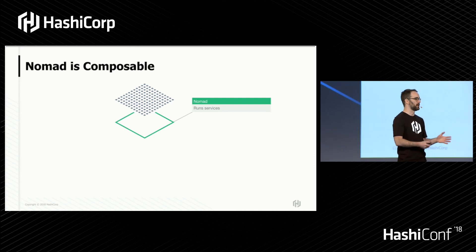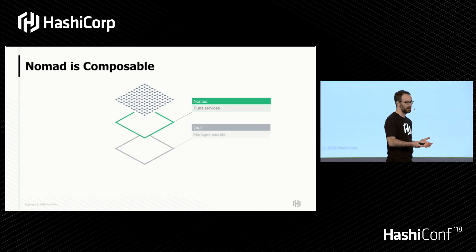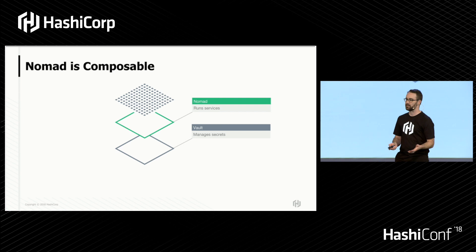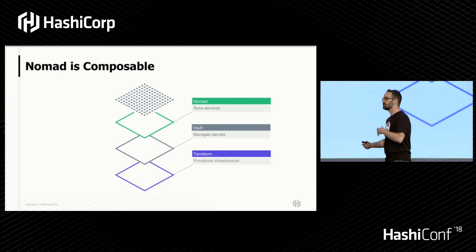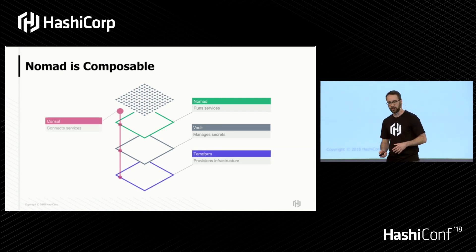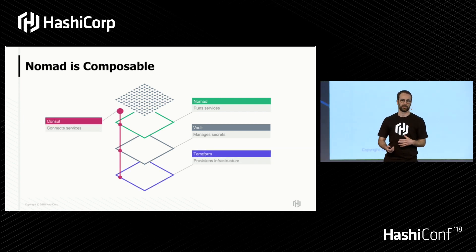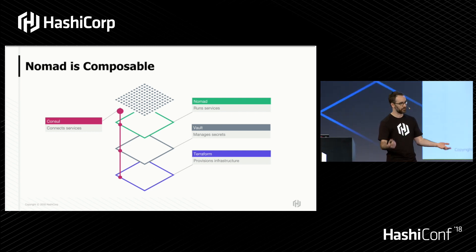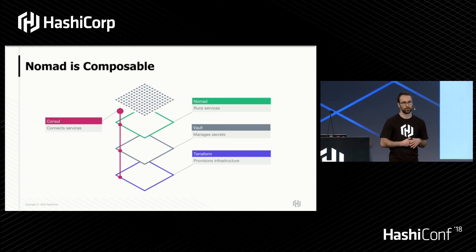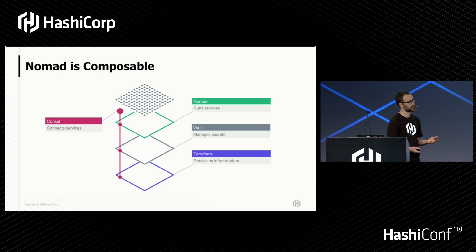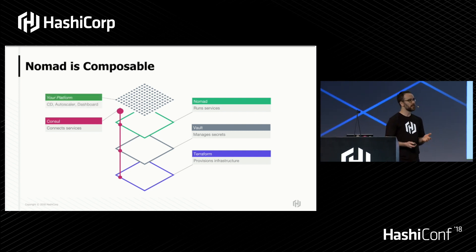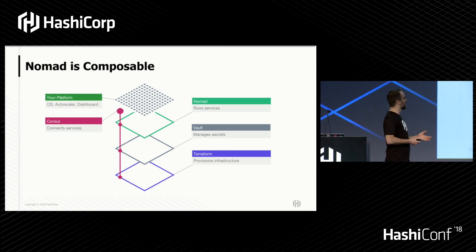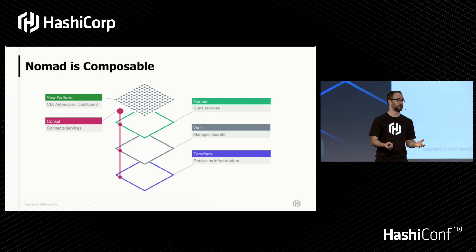Nomad has always been composable. What I mean by that is you can use Vault with it to manage your secrets, you can use Terraform to provision the infrastructure, you can use Consul to connect all the services, as well as Nomad itself can use Consul to self-assemble your entire Nomad cluster with zero configuration. Not only that, but Nomad can operate as just one component in your overall platform.